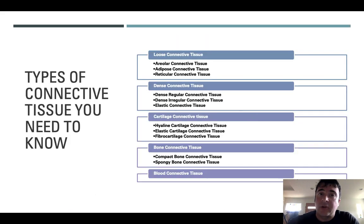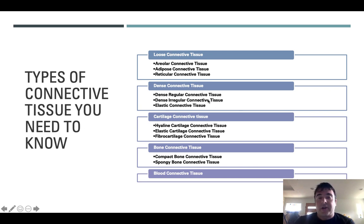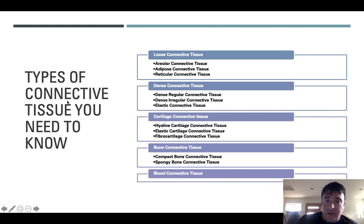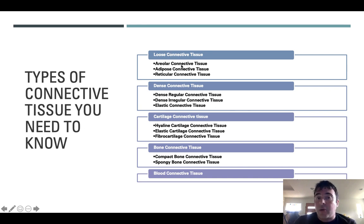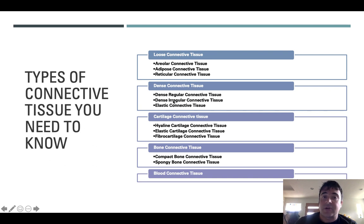In fact, jello mix comes from boiling down the connective tissue of animals and using their extracellular matrix components. These are the different types of connective tissues you need to know, broken into subgroupings: loose, dense, cartilage, bone, and blood. When I ask you to identify the tissue on an image, I'm asking for the specific tissue type, not just 'connective tissue.' The question 'identify the primary tissue' means connective tissue, but anything else means I want the specific tissue type.